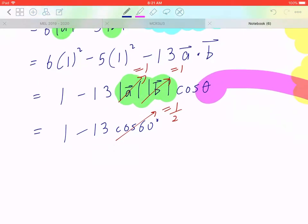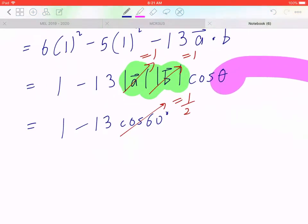And here comes the final answer. So, 1 minus 13 over 2 is going to be 1 minus 6.5. So, the final answer should be negative 5.5.